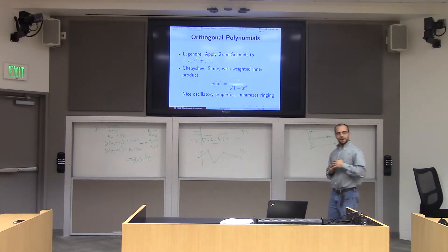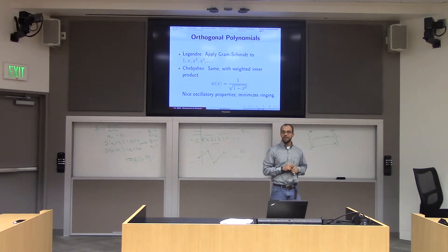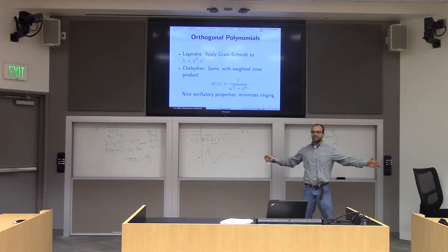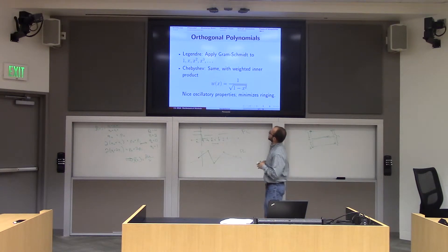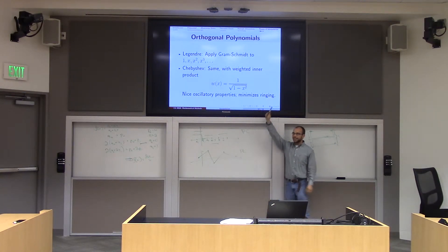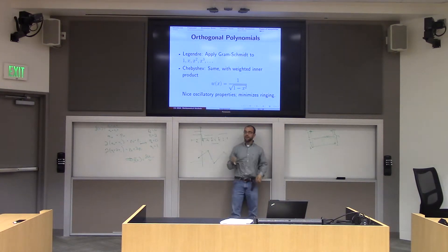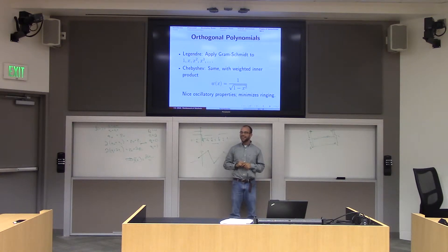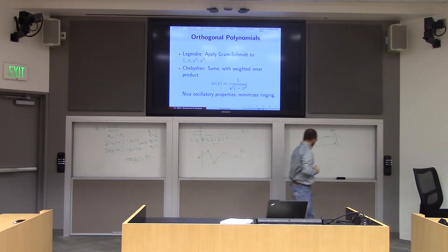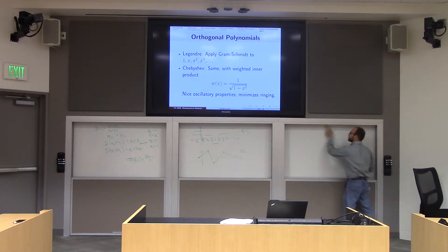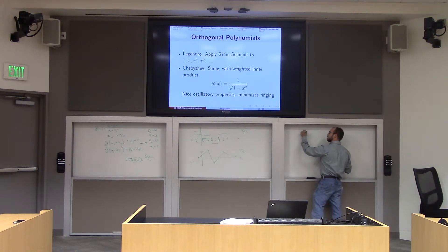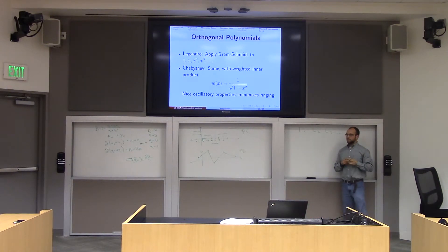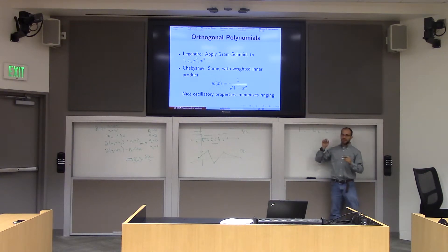Just like on the homework due today, where you took the Gram-Schmidt algorithm and extended it to A-orthogonal things, you can similarly plug in this functional dot product and make a set of functions orthonormal to one another. This gives you a very famous set of polynomials depending on the dot product you choose. The Legendre polynomials are obtained by taking the inner product from the previous slide and just running Gram-Schmidt on those polynomials — you can write down a set of orthogonal polynomials in closed form that way.